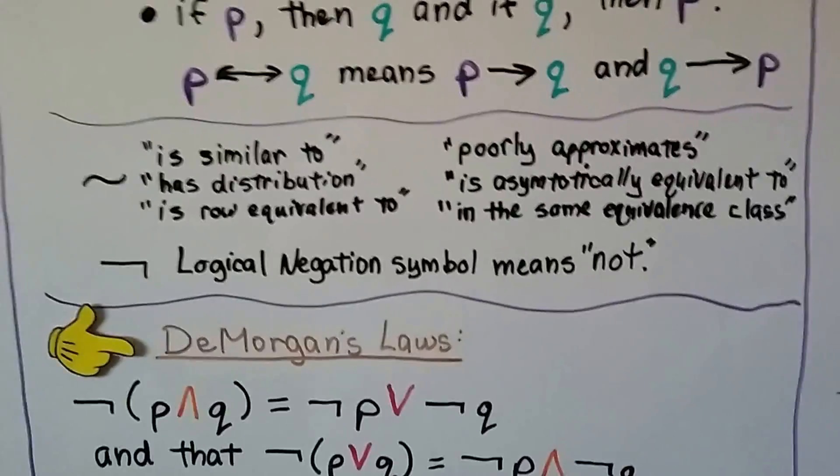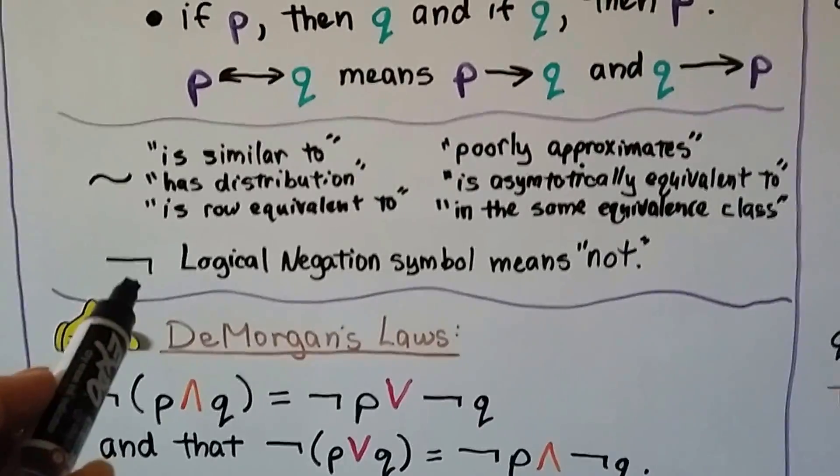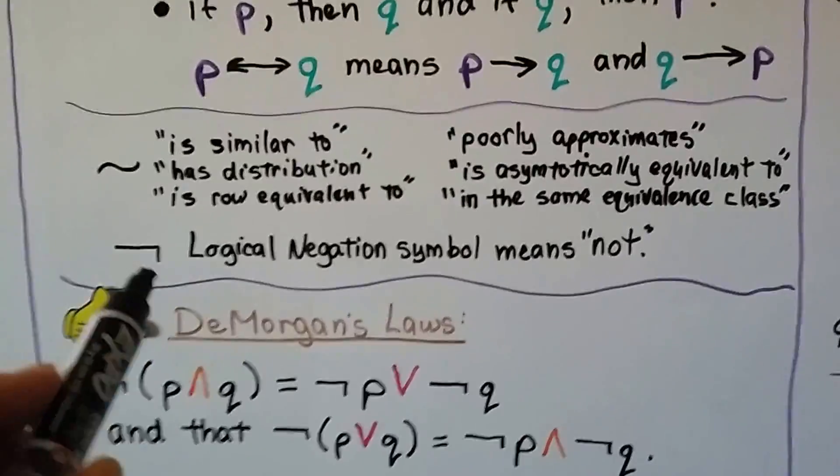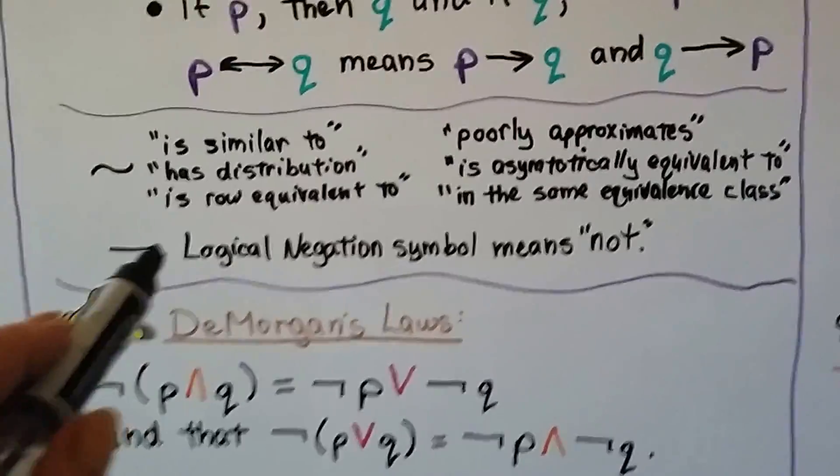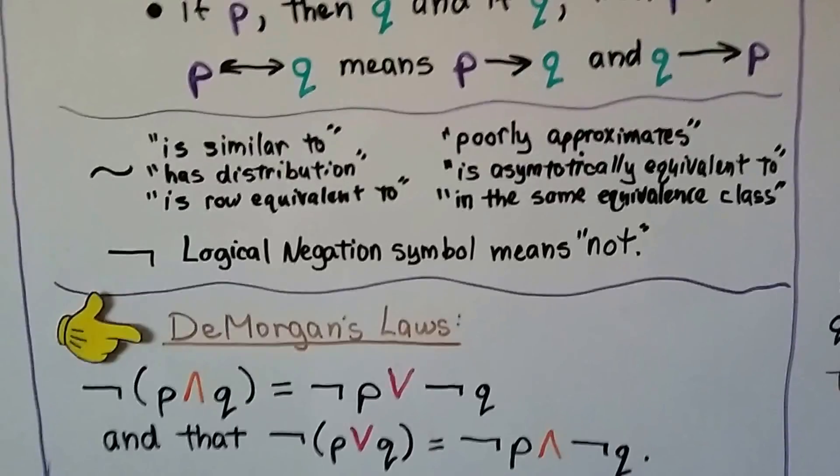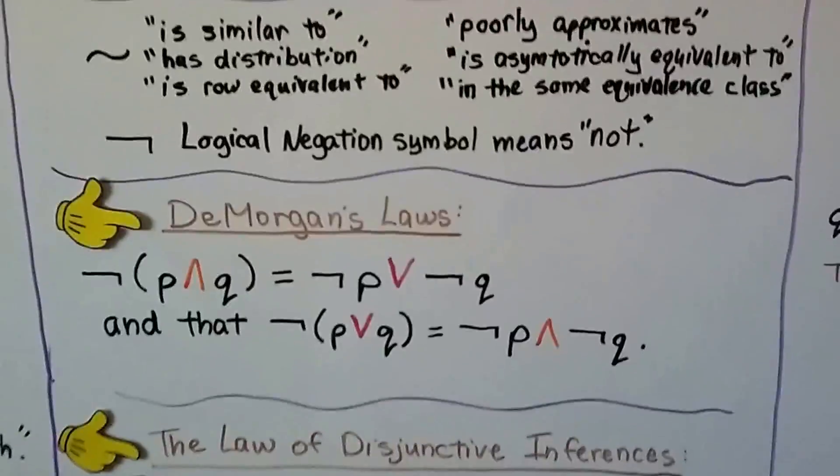So I prefer not to use it because math is confusing enough. This symbol here is the logical negation symbol that means NOT. It doesn't mean anything else. So there's less confusion if you just use this backwards sideways L. That's what we're going to use for NOT.